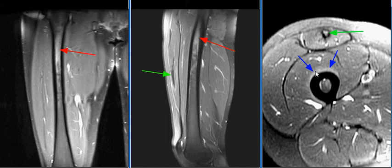There is periosteal edema along the anterior aspect of the proximal femur, consistent with a thigh splint or stress reaction.